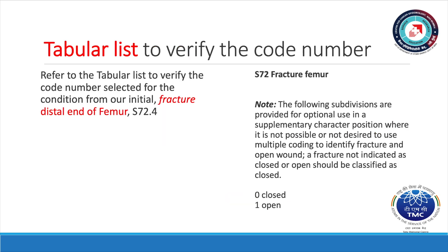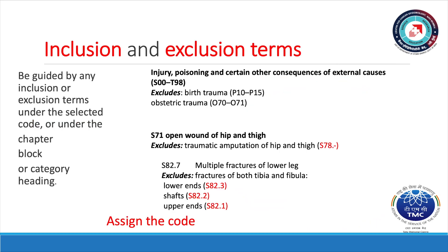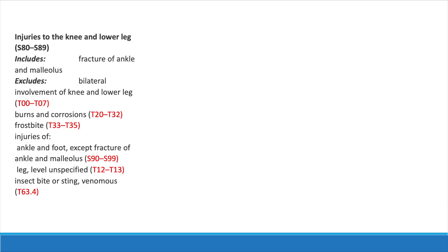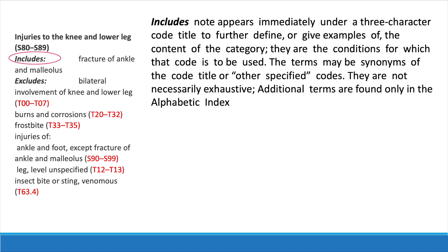After you have the code from the index, refer to the tabular list in Volume 1 to verify the code number selected for the condition — fractured distal end of femur, S724. Be guided by any note that appears in the tabular list. For example, be guided by any inclusion or exclusion terms under the selected code or under the chapter, block, or category heading. Includes notes, which appear immediately under a three-character code title, are used to further define or give examples of the content of the category. They are the conditions for which the code is to be used, and may be synonyms of the code title. They are not necessarily exhaustive; additional terms are found only in the alphabetical index.